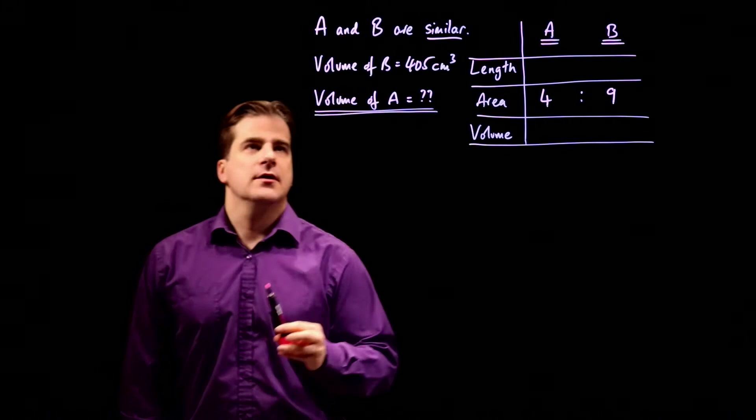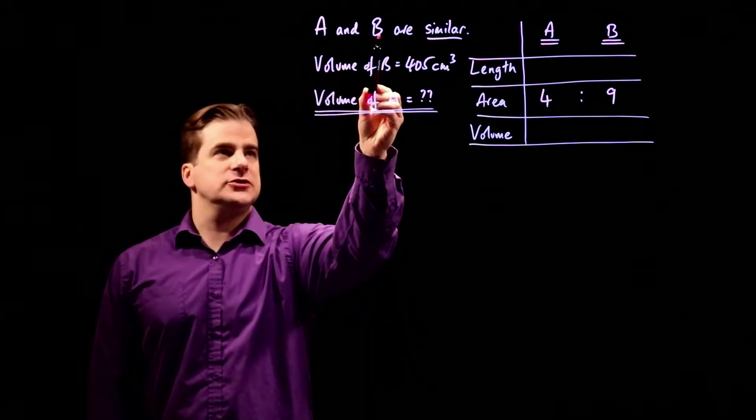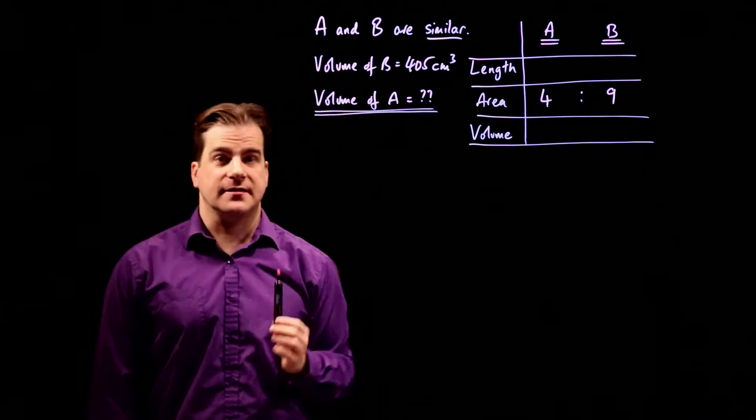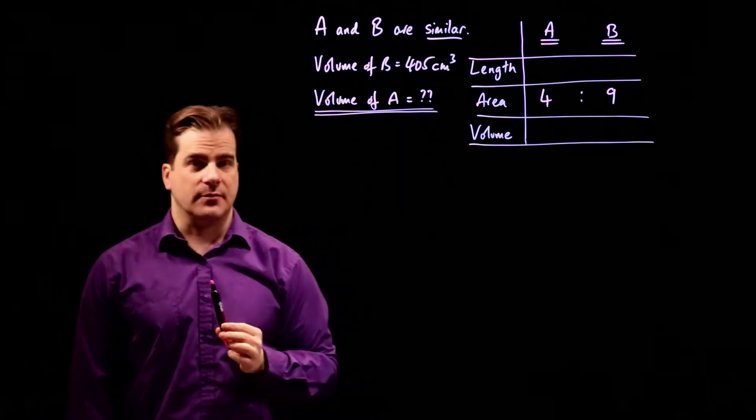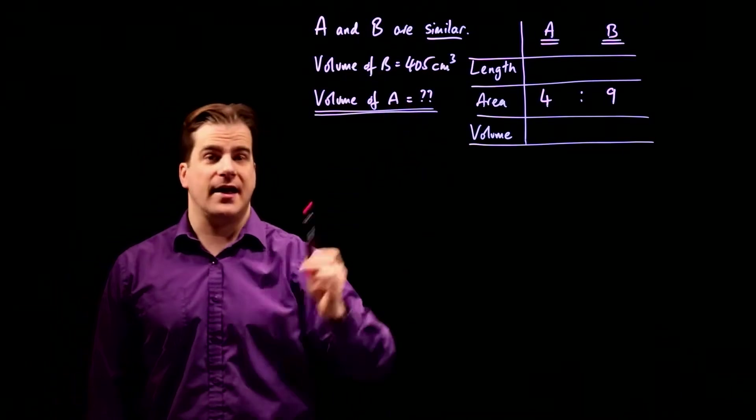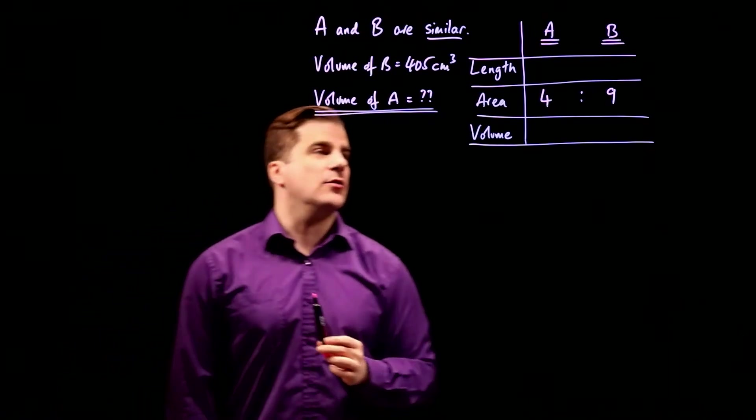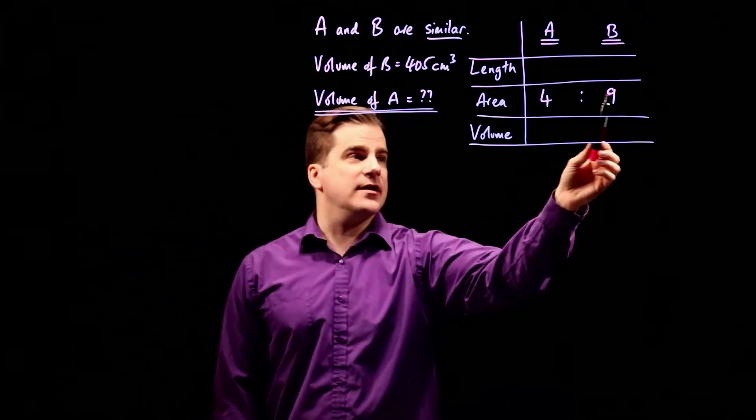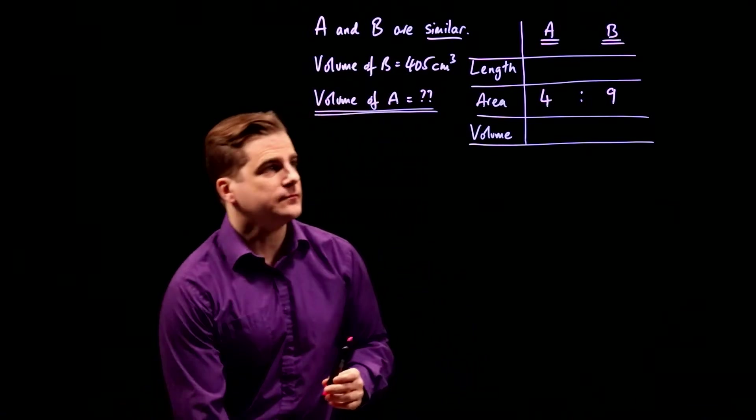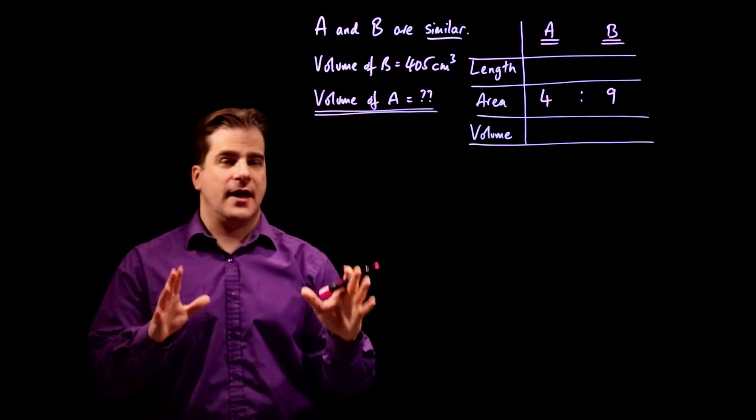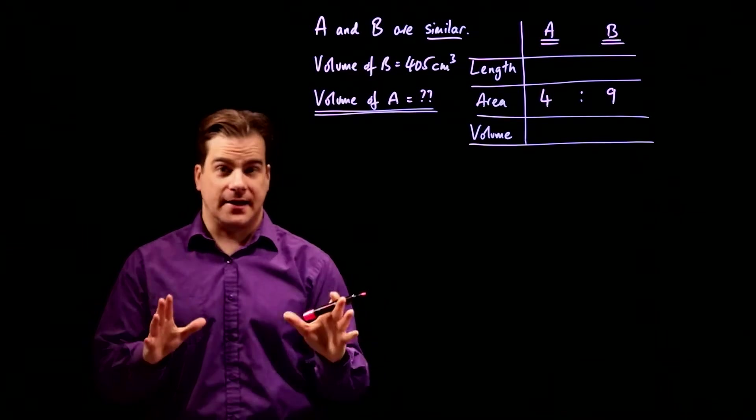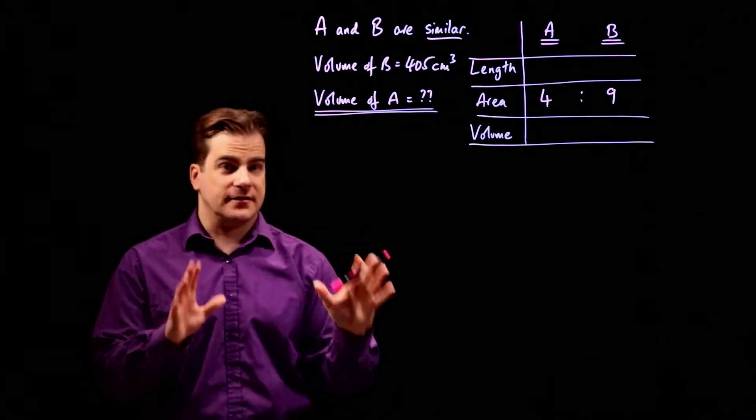Okay, so here's the problem. We've been told about two shapes, A and B, they're mathematically similar. We're told that the volume of B is 405 cm cubed, we have to work out the volume of A. And all we know is that the ratio of their areas is four to nine. So this is a volume area length scaling problem. Okay, and this is how you do it.